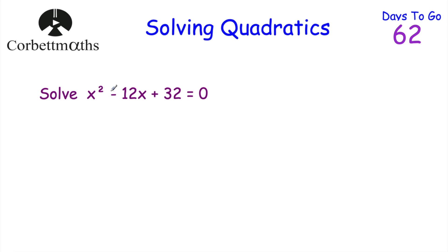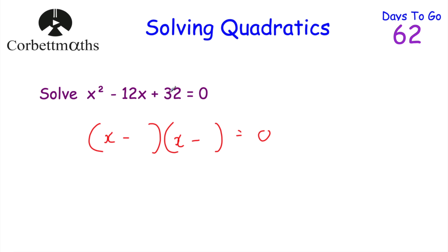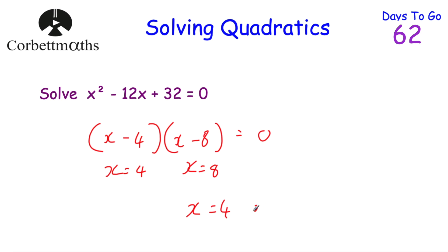Let's have a look at another one — feel free to pause the video and solve this quadratic equation. To solve it, because it equals 0, we factorise the left-hand side. We need two numbers that multiply to 32 and add to negative 12; since the product is positive and sum is negative, both are negative. I'm thinking negative 4 and negative 8: negative 4 times negative 8 is 32, and negative 4 plus negative 8 is negative 12. So x minus 4 times x minus 8 equals 0, giving x equals 4 or x equals 8.